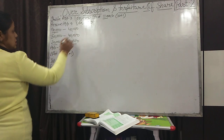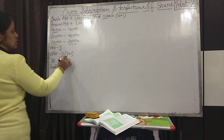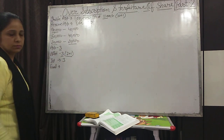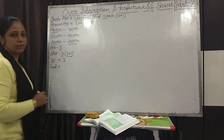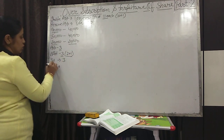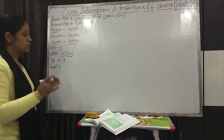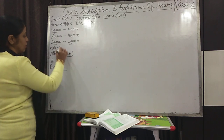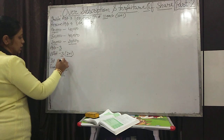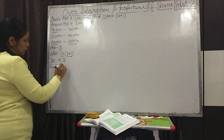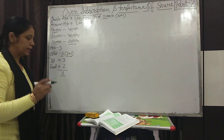The distribution of share money: on application ₹3, on allotment ₹3 including premium — that is ₹1 premium and ₹2 of share capital included in allotment. On first call ₹3 and on final call the balance. Full value of share is rupees 11. Company has called up ₹9, so remaining ₹2 will be called with the final call.